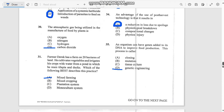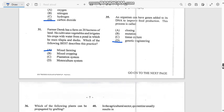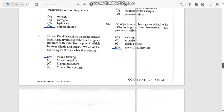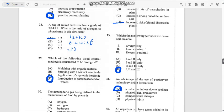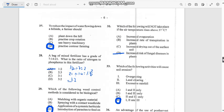Number 31: Farmer Derrick has a farm on 28 hectares of land. He cultivates vegetables and irrigates his crops with water from a pond in which he rears tilapia and ducks. Which of the following best describes this practice? This is mixed farming, guys. It's mixed because he has his land, cultivates vegetables, and rears tilapia and ducks. It's not just growing vegetables alone.